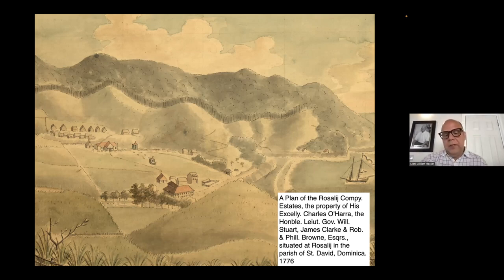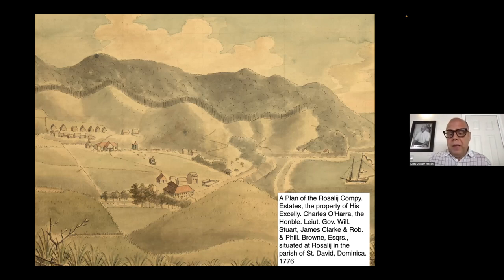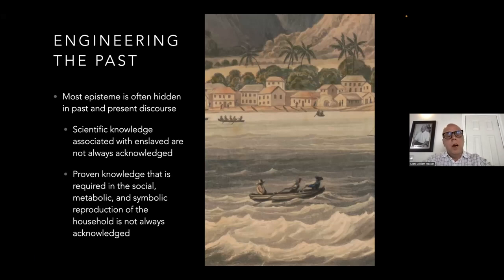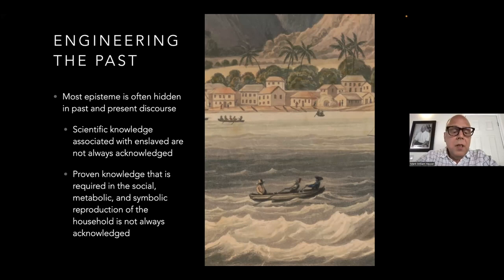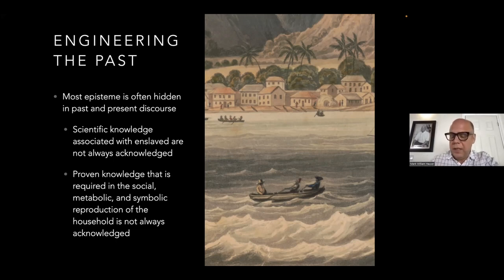This is an image of Rosalie Estate, which gives a sense of how much woodland had to be cut down just in the initial setting up of this sugar colony after 1763. It's also important to highlight that this sugar revolution was relatively short-lived. Unlike Barbados, Jamaica, Martinique, Guadalupe, and Saint-Domingue, the profits from sugar started to fail by the 1820s, and the island converted into different forms of agricultural production.